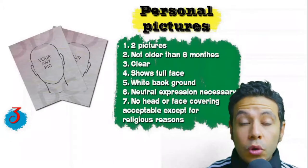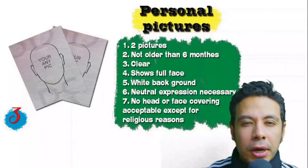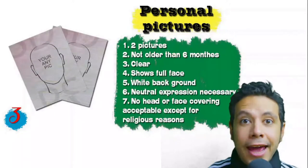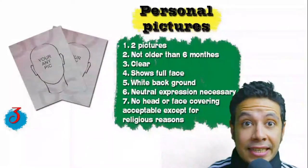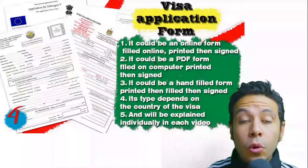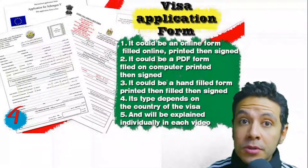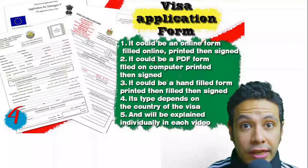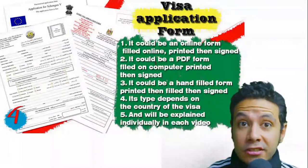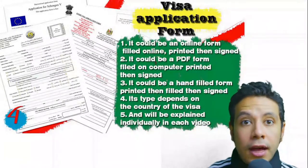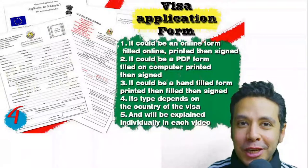In some cases you might be required to photocopy every single page of your passport, but generally only the data page and photo page are needed. For personal pictures, you will need at least two — sometimes one or three — but generally two. They must not be older than six months, should be clear, show your full face, preferably with white background, and with normal neutral expressions. No head or face covering is acceptable except for religious reasons. For the visa application form, generally you need only one copy, but sometimes two or three copies are required.